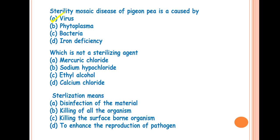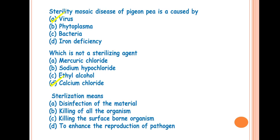The next question is, which is not a sterilizing agent? The answer is D, calcium chloride. All above three are, that is the mercuric chloride, sodium hypochlorite, ethyl alcohol, all these three are chemical sterilizing agents. So, these chemicals are generally used to sterilize the surface or seed. You may have used in laboratory.